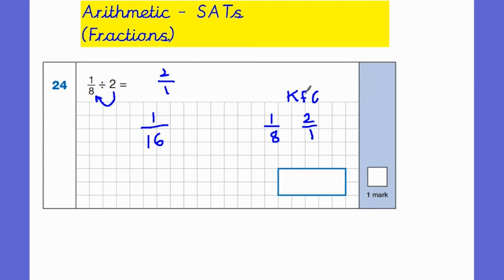My F stands for flip. So I need to flip this. So that's going to become 1 half. So I have 1 eighth and then I have 1 half. And then my C stands for change. I need to change my division sign into a multiplication sign. And then my answer is 1 sixteenth. So I get the same answer no matter which method that I use.